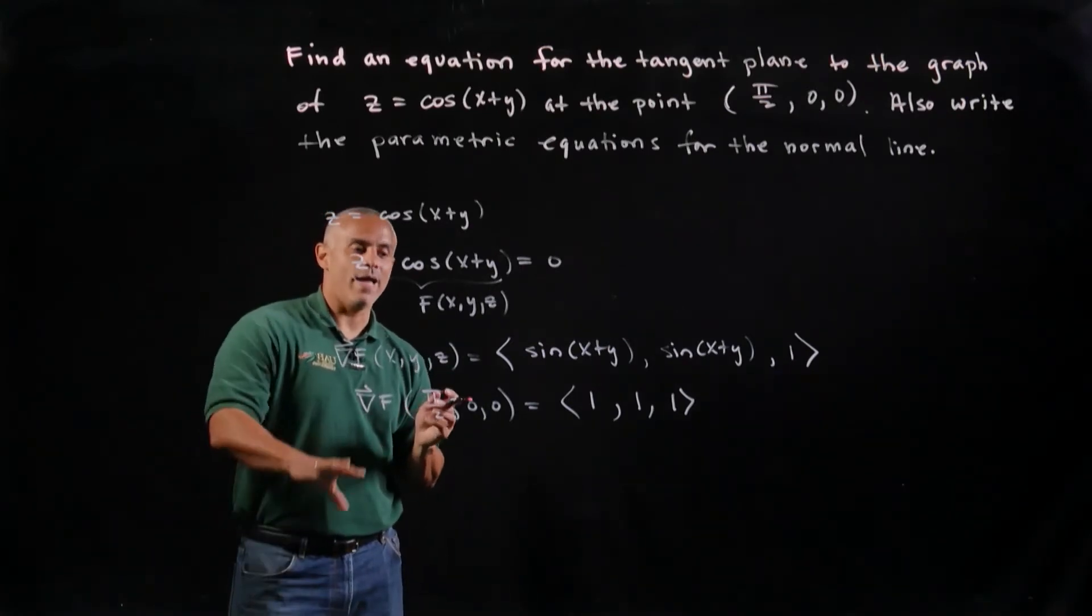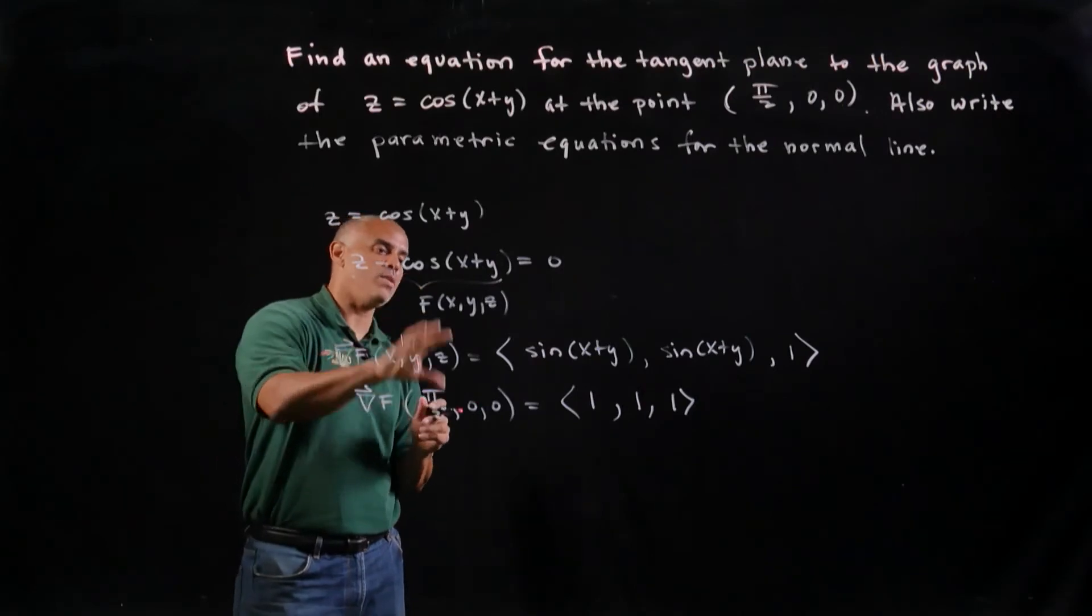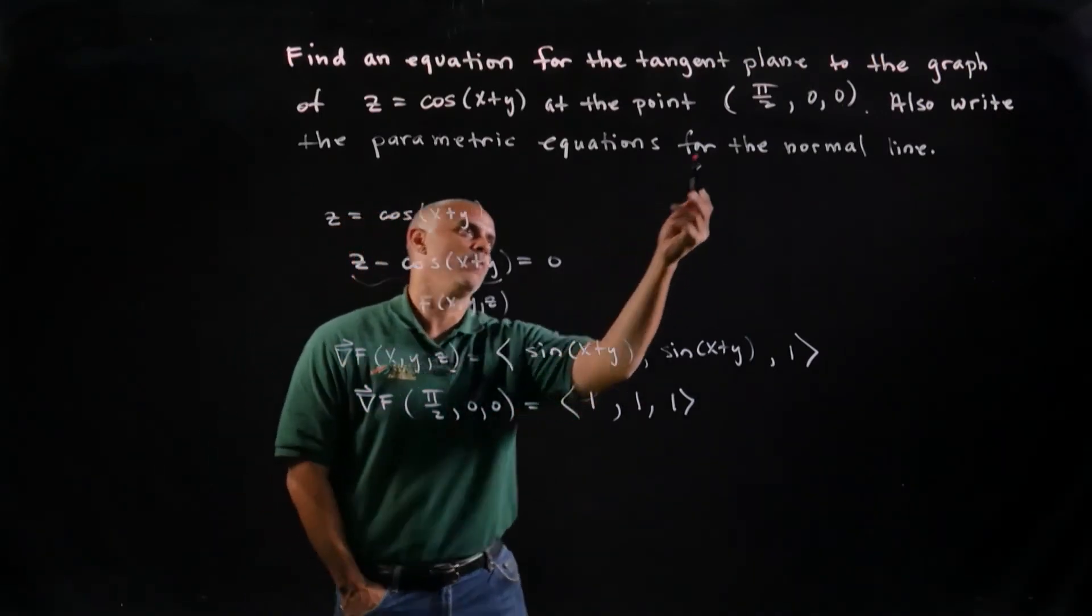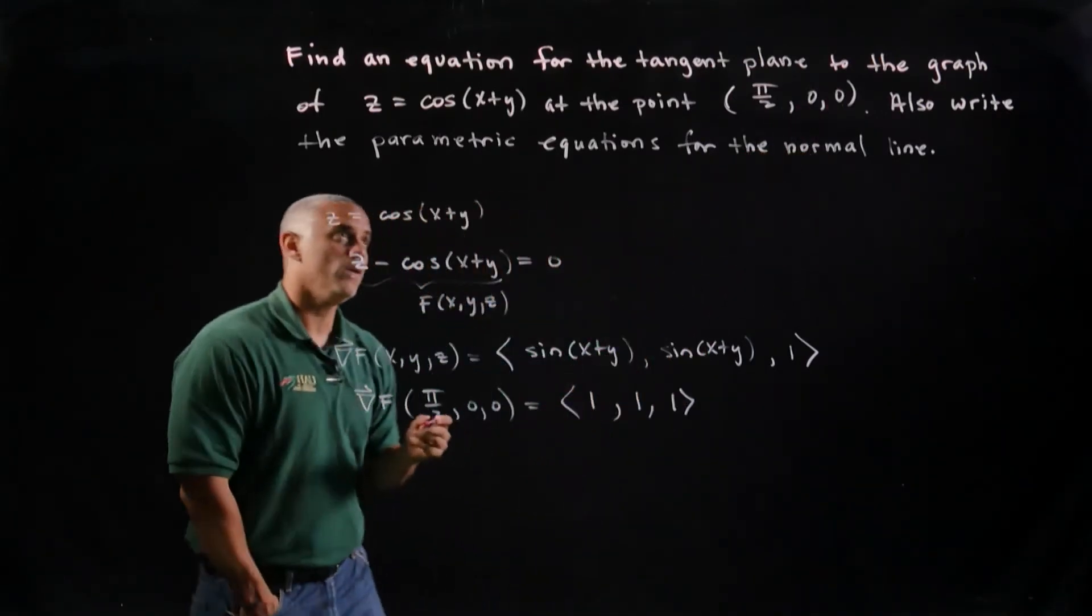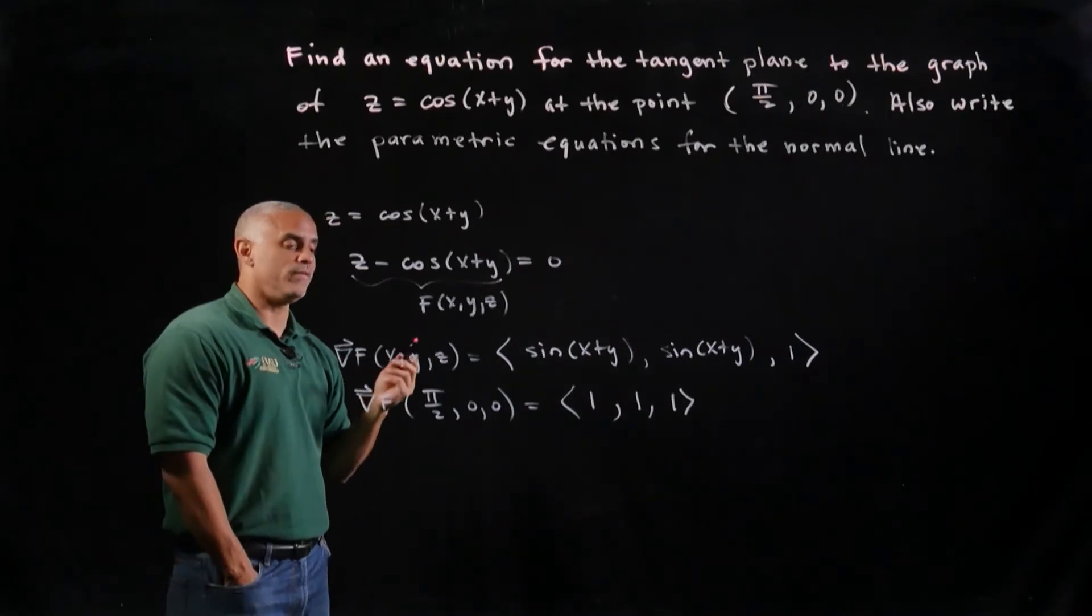So with my direction numbers, now I need to use it and my point, because my point gives me my x naught, y naught, z naught, to write the equation of a tangent plane.